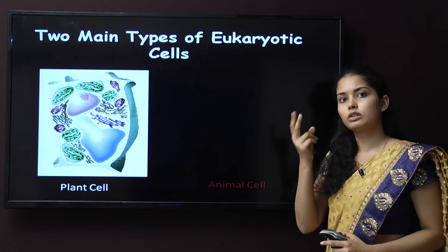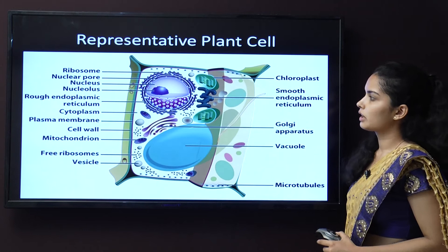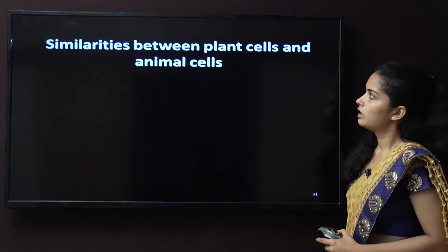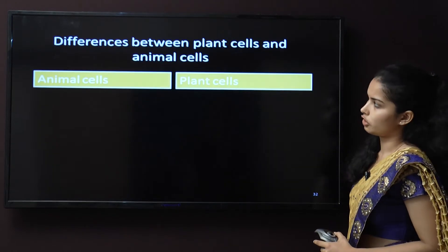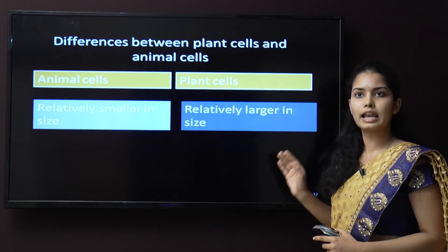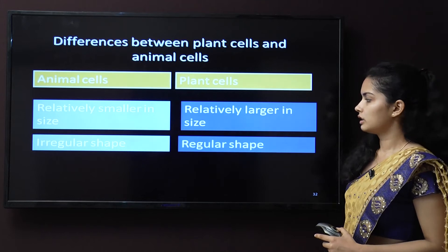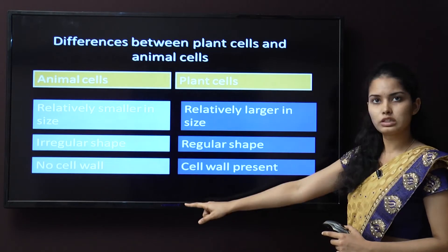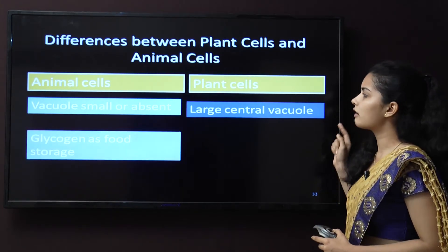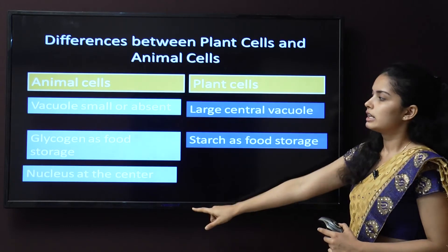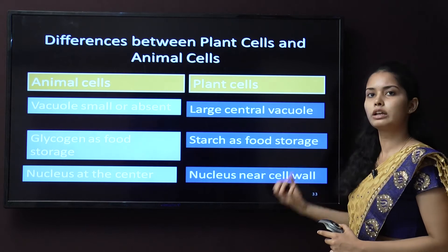Eukaryotic cells are divided into two main types: the plant cell and the animal cell. Similarities: both have a cell membrane surrounding the cytoplasm, both have a nucleus, and both contain mitochondria. Differences: animal cells are relatively smaller and irregular in shape; plant cells are relatively larger with a regular shape due to the cell wall. Animal cells have no cell wall. Vacuoles in animal cells are very small or absent, while plant cells have large central vacuoles. Food storage in animal cells is glycogen; in plant cells it is starch. The nucleus is at the center in animal cells, but near the cell wall in plant cells.